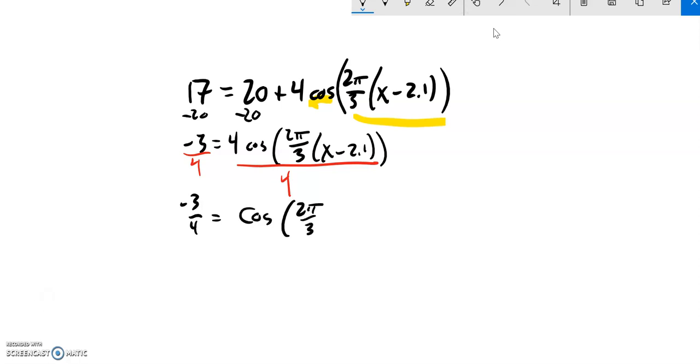2π/3(x - 2.1), and so now let's resolve this cosine thing. Cosine of all this would give me that ratio.